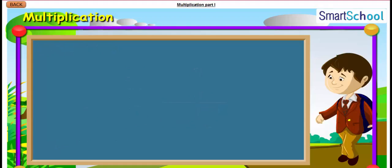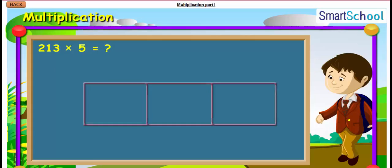Let us take another example. Let us multiply 213 into 5. Here, we can break 213 as 200 plus 10 plus 3. Now, if we multiply this with 5,